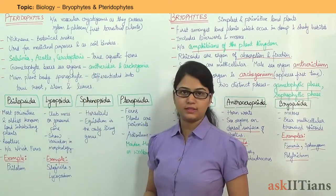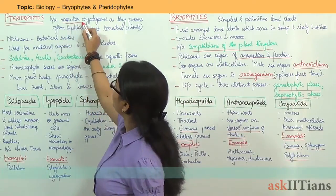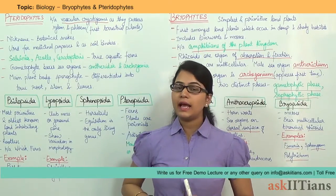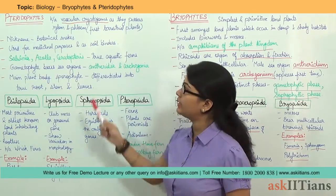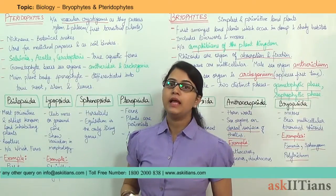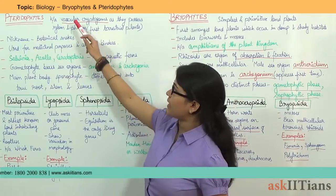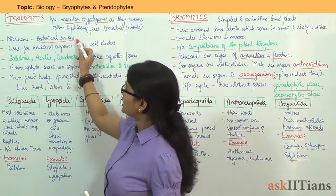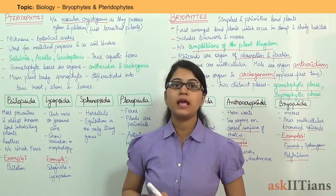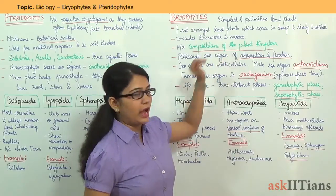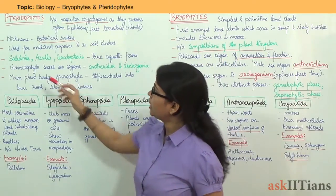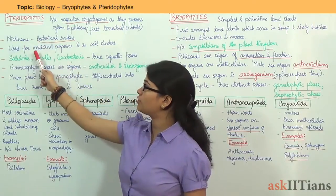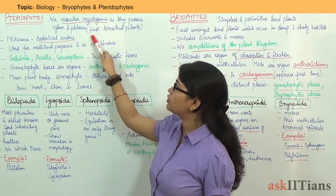Now we will move on to Pteridophytes. Pteridophytes are also known as Vascular Cryptogams, because they possess Xylem and Phloem, which are the vascular tissues. It is for the first time in the plant kingdom that vascular tissues are found in Pteridophytes. Their nickname is also Botanical Snakes, because they evolved after Bryophytes. Pteridophytes are also used for medicinal purposes and as soil binders.